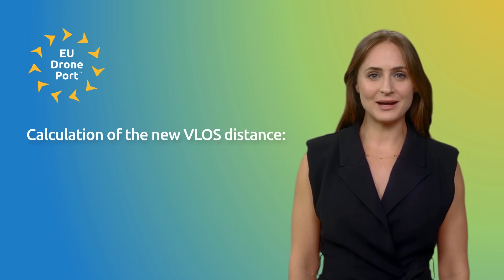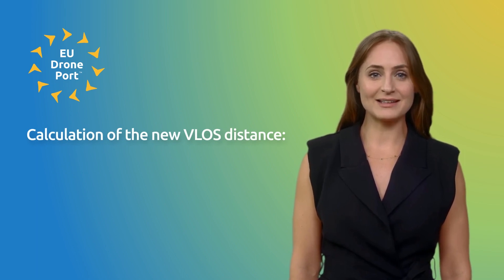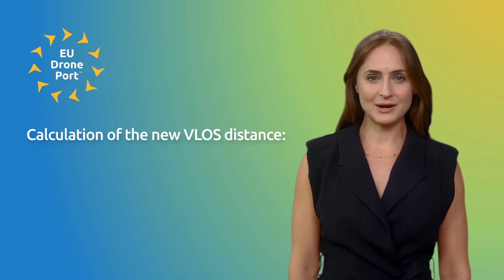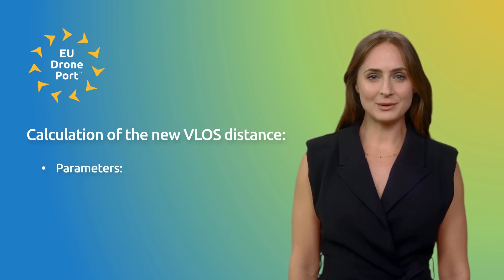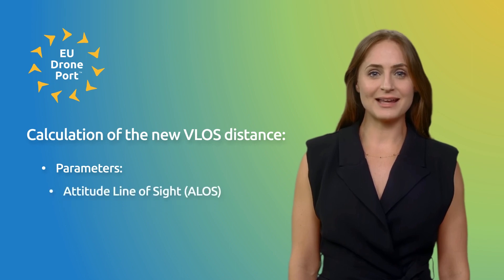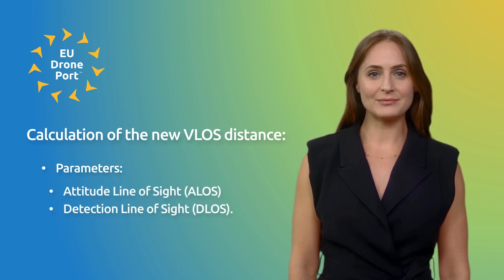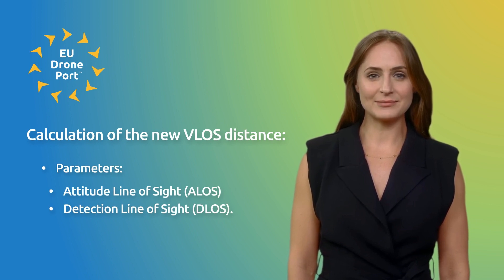Calculation of the new V-Loss distance: understanding and accurately calculating the V-Loss distance is critical for safe drone operation. The V-Loss distance can be determined using two key parameters — attitude line of sight and detection line of sight. The formulas can be viewed in our blog; we will leave the link in the description.